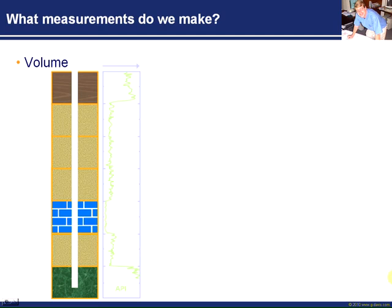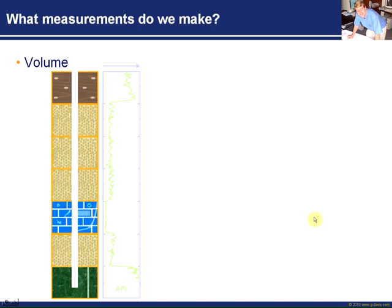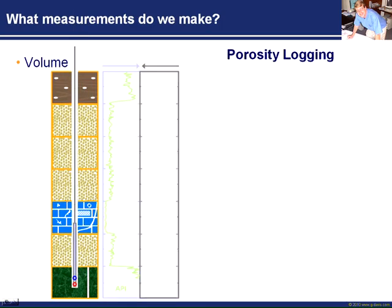The next element that we need to know about rocks is what is the volume available to hold fluid. The term is porosity. What porosity is available in these rocks? If we put some holes in these rocks, you can see we have pore space, and we need to make measurements to quantify how much pore space is available to hold fluid. So we put another type of wireline tool down in our wellbore and we are now porosity logging.